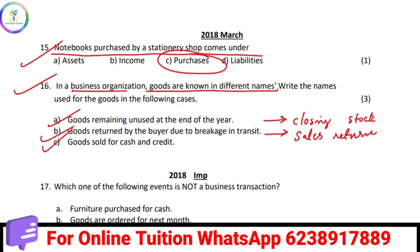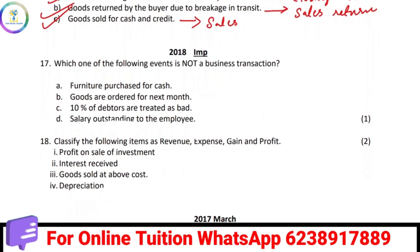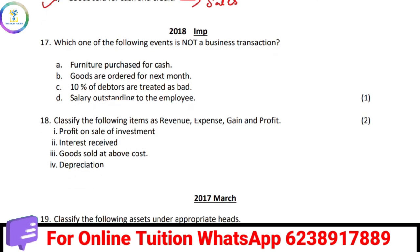Goods sold for cash and credit — what is the goods sold for credit? Which one of the following events is not a business transaction? Goods ordered for next month.